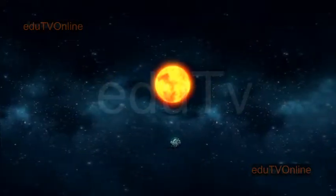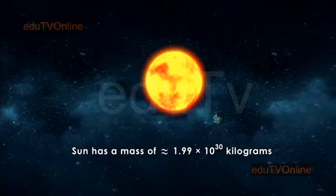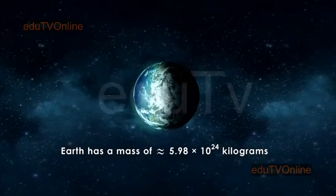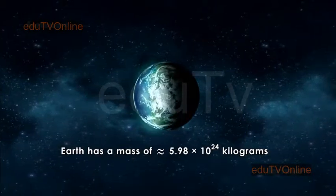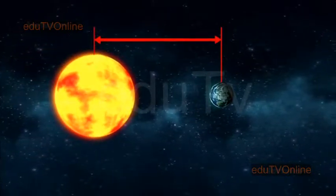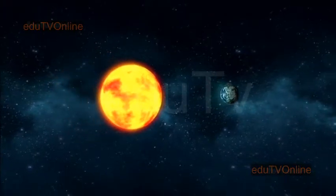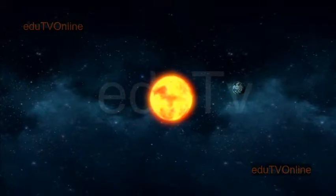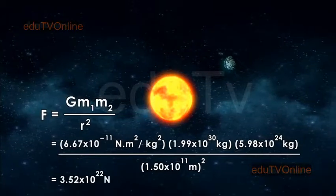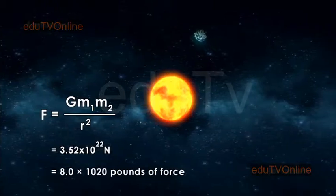Let's calculate the force of attraction between the sun and the earth. The sun has a mass of approximately 1.99 times 10 power 30 kilograms, while the earth has a mass of roughly 5.98 times 10 power 24 kilograms. The distance between the sun and the earth is about 1.50 times 10 power 11 meters. If we substitute these numbers into the equation, the force of gravity between the sun and earth is 3.52 times 10 power 22 newtons, or about 8.0 times 10 power 20 pounds of force.